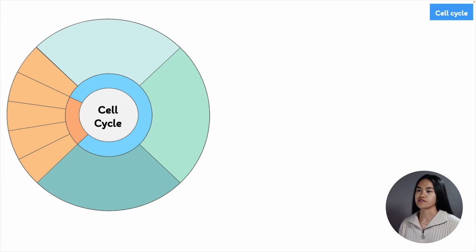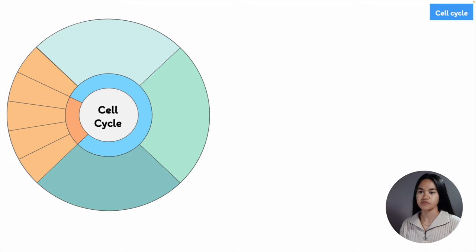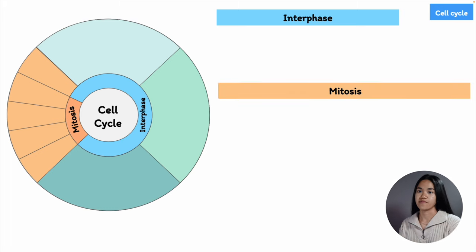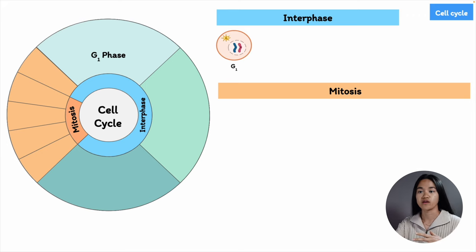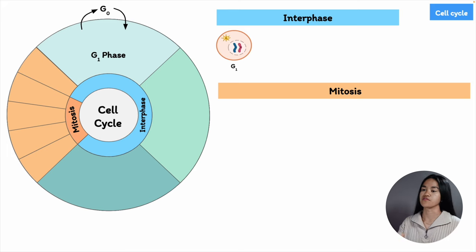As we covered in the previous lecture, the cell cycle is an ordered sequence of events — a cycle of duplication and division that occurs in a cell. The stages are divided into two major phases: interphase and the M phase. During interphase, the cell grows and makes a copy of its DNA. We can divide interphase into three stages. In the G1 phase, the cell grows and becomes larger. Cells in G1 can also exit the cell cycle and enter the G0 phase, a state of quiescence. Cells can enter G1 either from the preceding M phase or from the G0 phase.